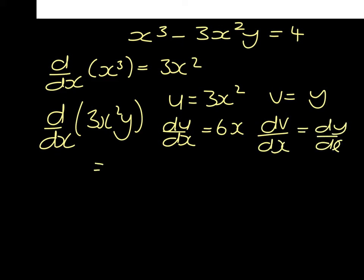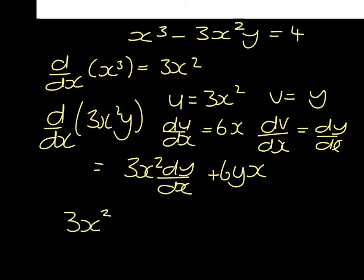So that differential will be u dv dx plus v du dx. So if we put all of that together, whenever we differentiate, we get 3x squared minus 3x squared dy dx minus 6yx equals 0.